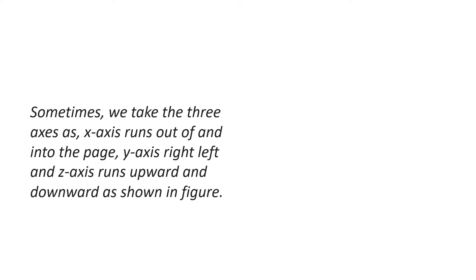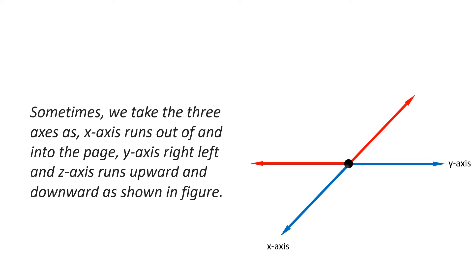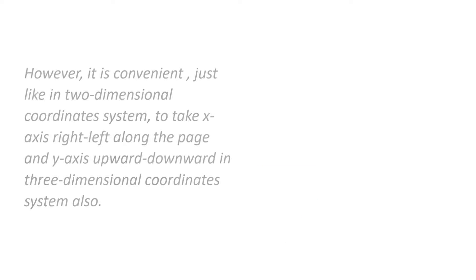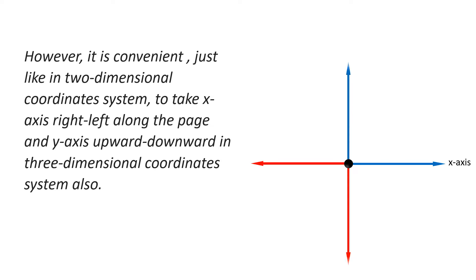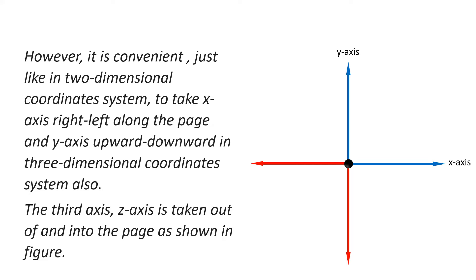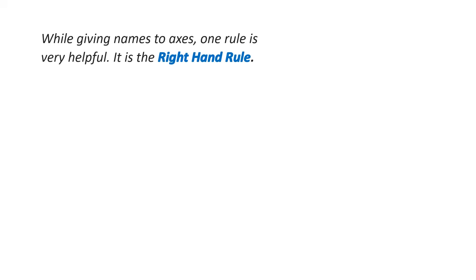Sometimes we take the three axes as x-axis running out of and into the page, y-axis right-left, and z-axis upward and downward. However, it is also convenient to take x-axis right-left along the page and y-axis upward-downward, with z-axis running out of and into the page. While assigning names to the axes, one very helpful rule is the right-hand rule.